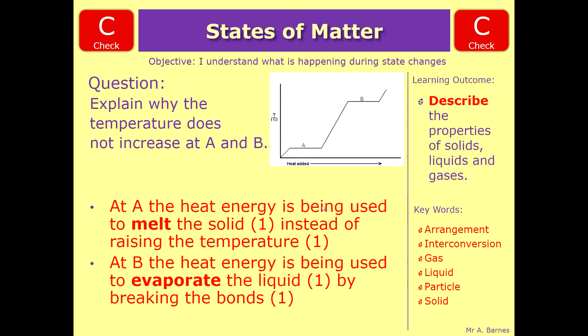Okay, let's have a look at the mark scheme then. So at A, what's happening is the heat energy is being used to melt the solid, so you get one mark for saying melt the solid at A. And that's being done instead of raising the temperature, which is why it stayed flat. So melt the solid for one mark instead of raising the temperature for the second.